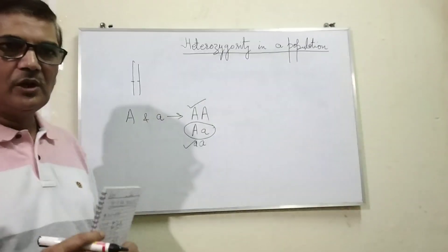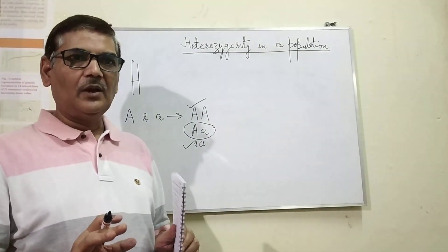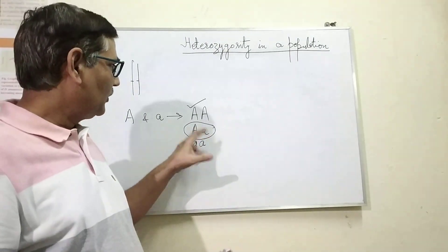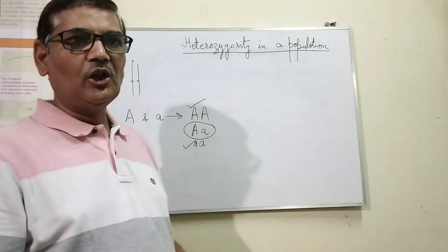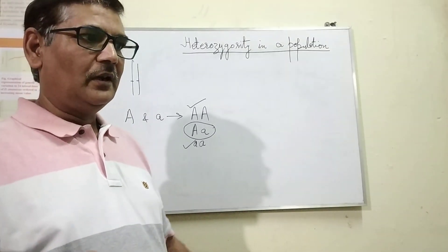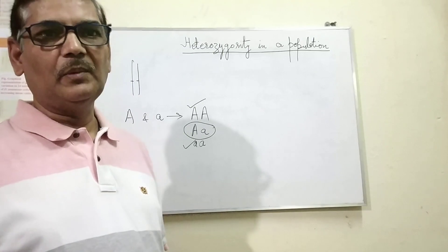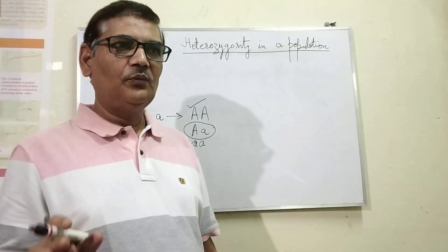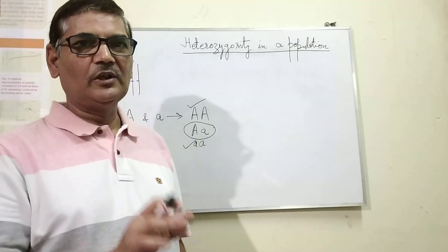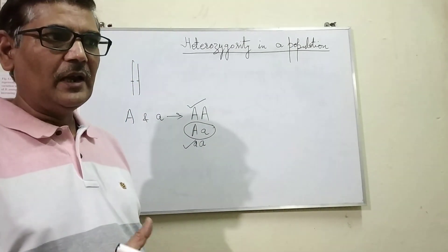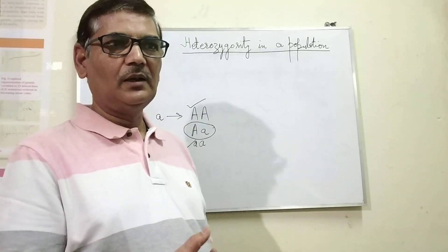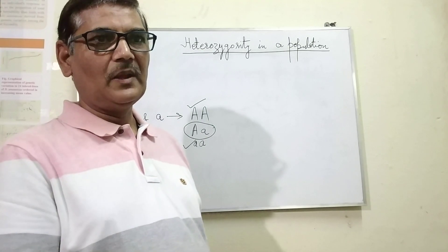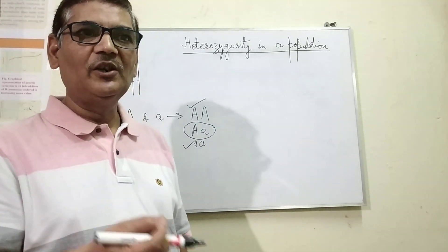Heterozygotes will definitely be present in the population if it is a large and randomly mating population. But the frequency of these heterozygotes will depend on the number of individuals present in the population. If a population is very large, we expect quite a good number of heterozygotes. If a population is very small, then the number of homozygotes will be more, because of inbreeding.